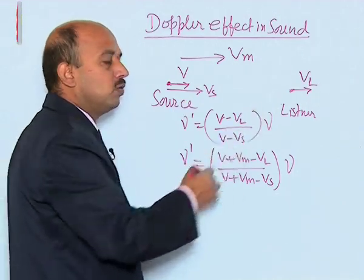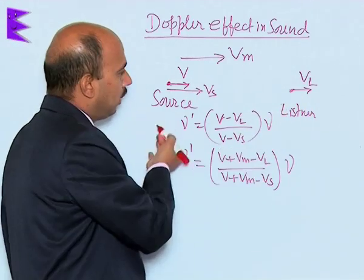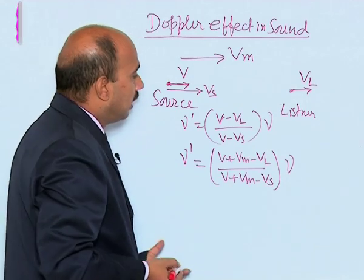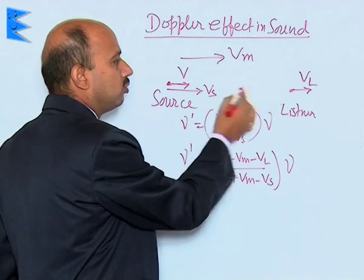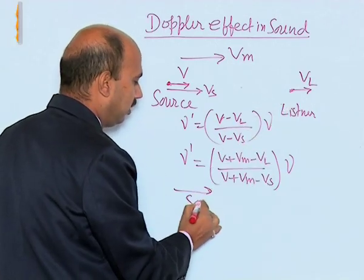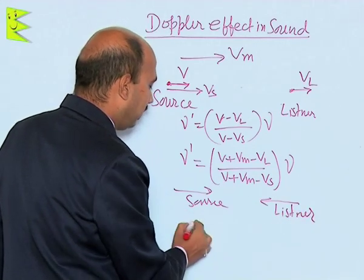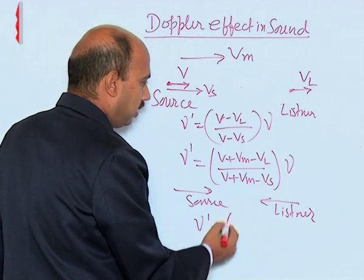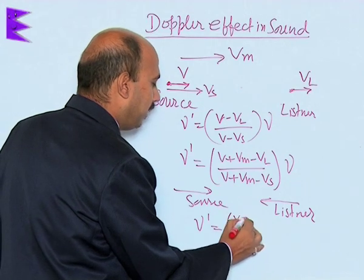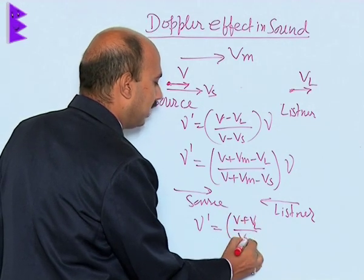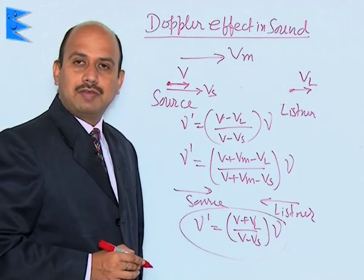When the source is moving towards the listener — direction s to l — we take all distances positive, and when the direction is l to s, we take all distances negative. Now suppose the source and listener are both approaching towards each other — source moving one side and listener moving the other side. Then, taking vm as zero, the formula becomes ν' = (v + vl) / (v − vs) × ν. This is the apparent frequency.